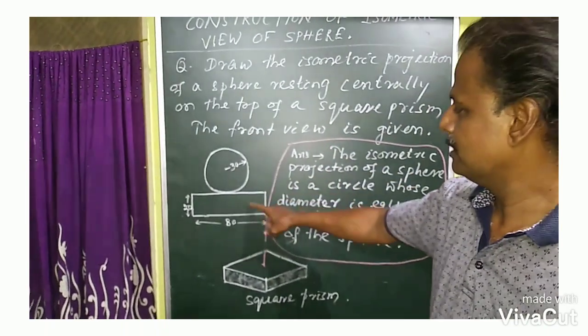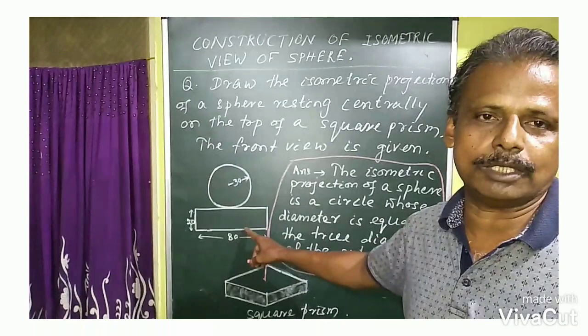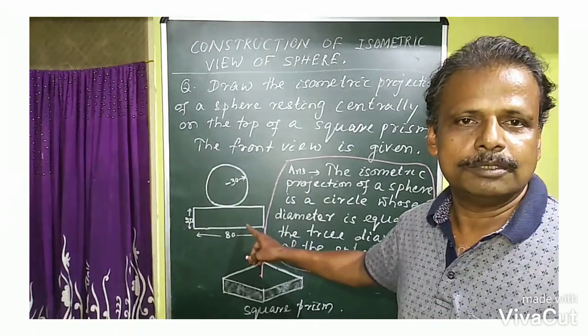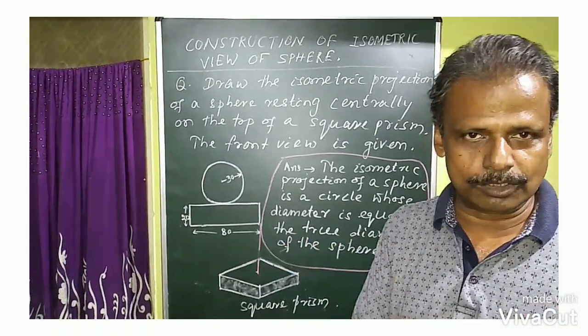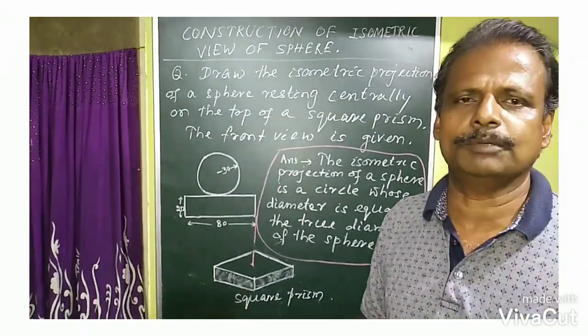The front view is given. The front view and side view both are equal. For isometric view construction, we need not take the top view.